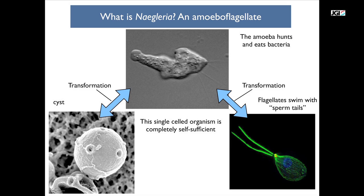My name is Lillian Fritz-Leyland and I'm a graduate student here at UC Berkeley. My primary interest is in how cells move. I'm interested in both amoeboid motility as well as flagella motility.